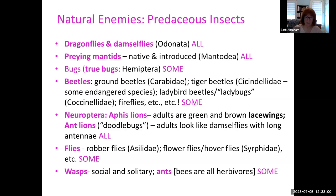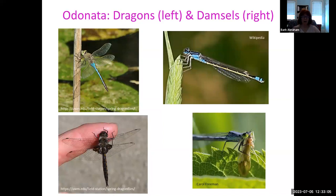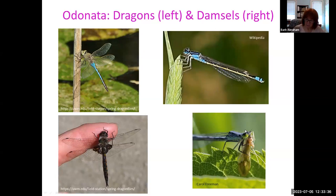Odonata — dragonflies and damselflies. Dragonflies are usually bigger and hold their wings out straight at rest. Damselflies are usually smaller and more delicate, though there are some fairly large ones — they fold their wings at rest. Notice the tiny bristle-like antennae on dragonflies. All predators.